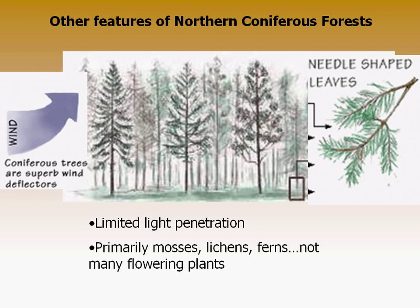Some features of the northern coniferous forests include limited light penetration, which limits the types of understory vegetation — primarily mosses, lichens, and ferns. The forests are also ideally shaped to handle harsh conditions and wind, as conifer trees have a wind deflection capability with their needle-shaped leaves.